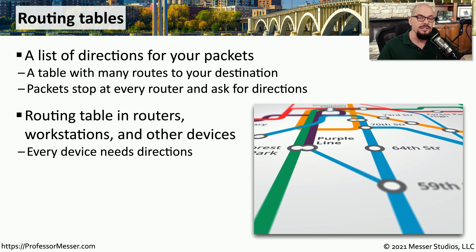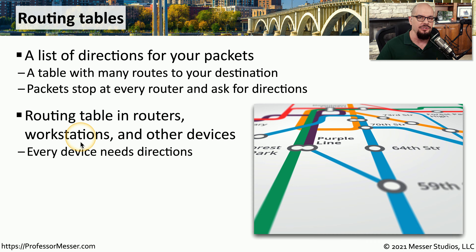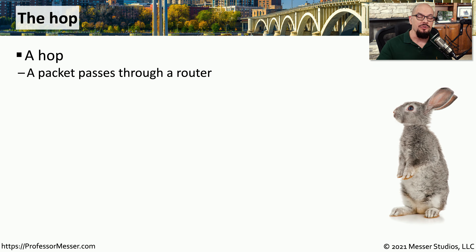Any device that needs to make a decision on where traffic goes has a routing table. This means that our routers have routing tables, our workstations have routing tables, and anything else that makes this forwarding decision has to have a list it can reference to find out where it should be sending traffic. When these frames traverse a router, we refer to that as a hop.